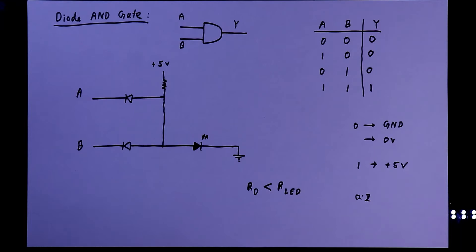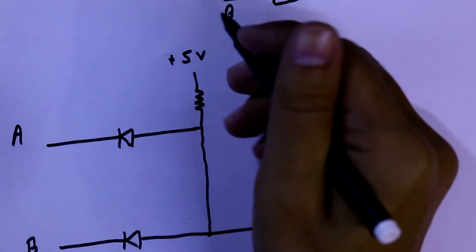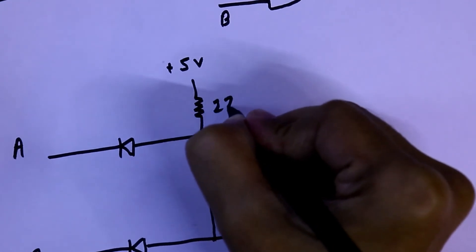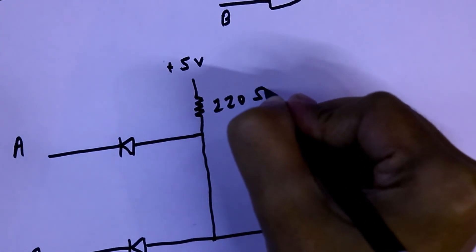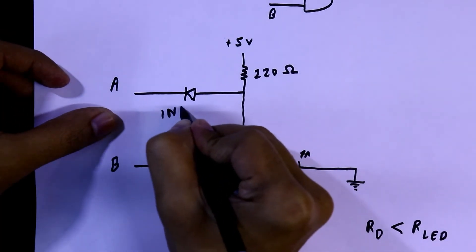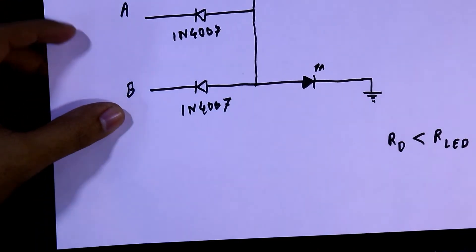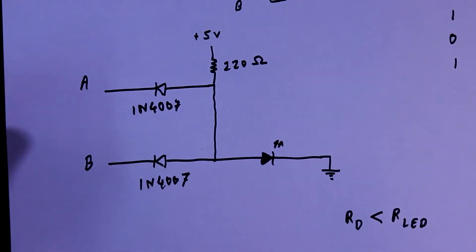This is how the diode AND gate circuit works. Now we will see the practical circuit on the breadboard. For the practical circuit, we will use a 220-ohm resistor and a 1N4007 diode.